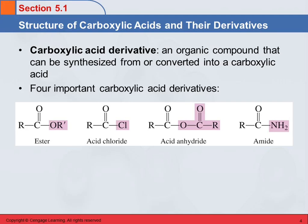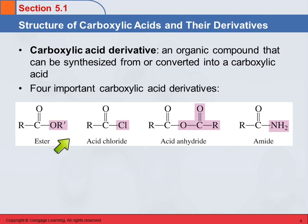We can also have derivatives of carboxylic acids. A derivative is when we're just tweaking the carboxylic acid. There are four different types of derivatives we're going to look at. The first is an ester, where the hydroxyl group is replaced with an OR group. An acid chloride is where the hydroxyl group is replaced with a chloride. There's also an acid anhydride and an amide. We'll talk about those later, but first we're going to talk about carboxylic acids themselves.